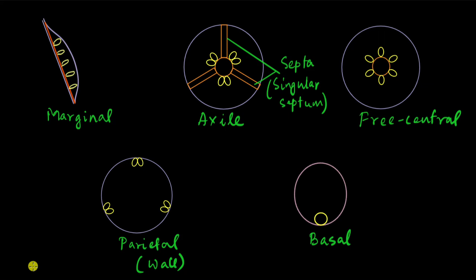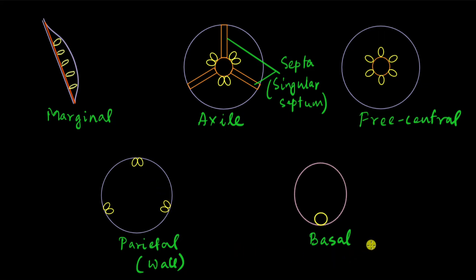So you've learned about five main types of placentation. Marginal, where the ovules are attached at the margin of the ovary. Axile, where the ovules are attached at the axis with septa like the spokes of a wheel. Free central, where the ovules are attached at the center but are free and not bound by septal walls. Parietal, where the ovules are present at the wall of the ovary — parietal means wall. And basal placentation, where there is a single ovule present at the base of the ovary.